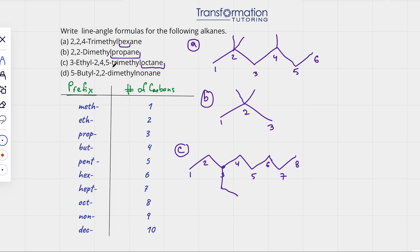2, 4, 5 trimethyl. So I have a methyl group on carbon number 2, just one carbon. Remember, meth is one carbon. A methyl group coming off of carbon 4, and a methyl group coming off of number 5. And that must be my C.